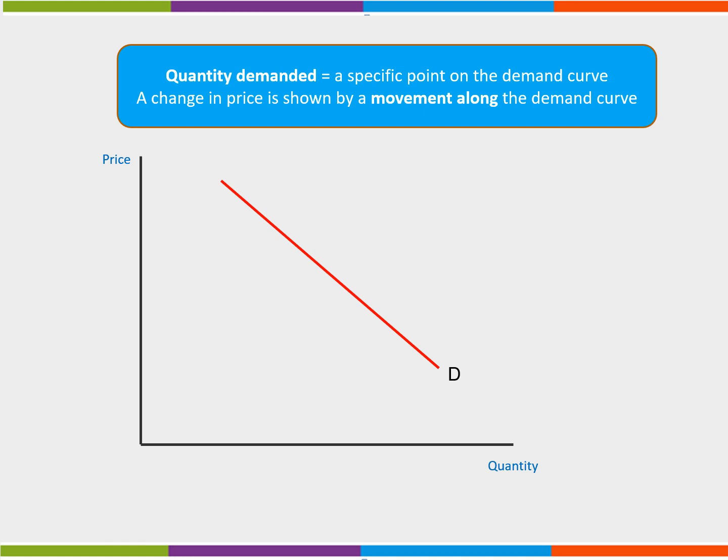A change in the price of a product will lead to a change in the quantity demanded that consumers are willing and able to buy at the new price. This will be shown by a movement along the demand curve.